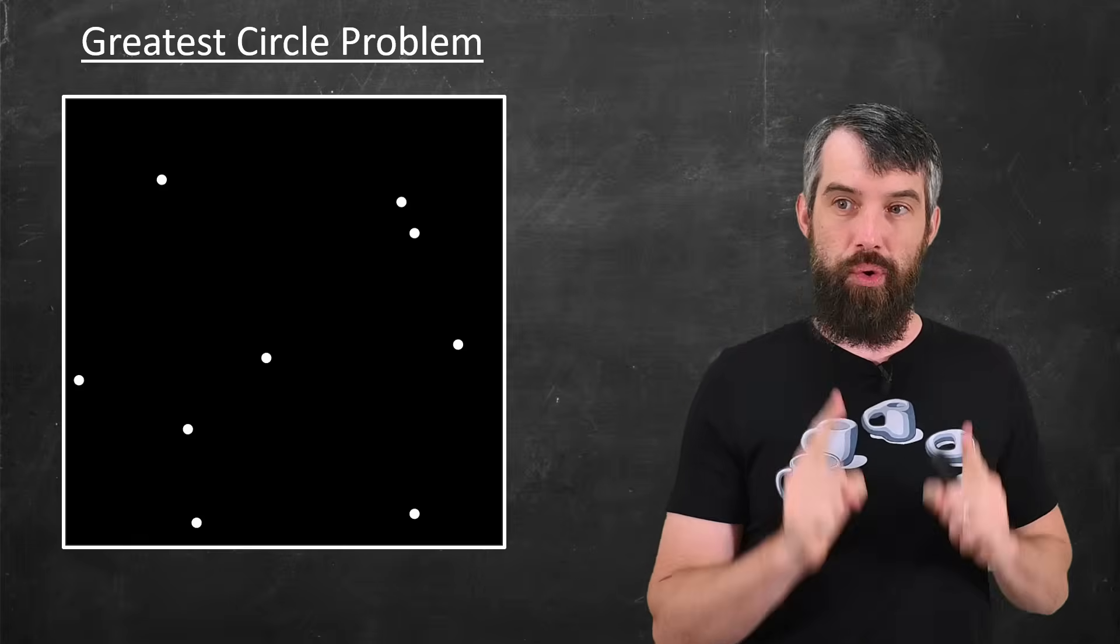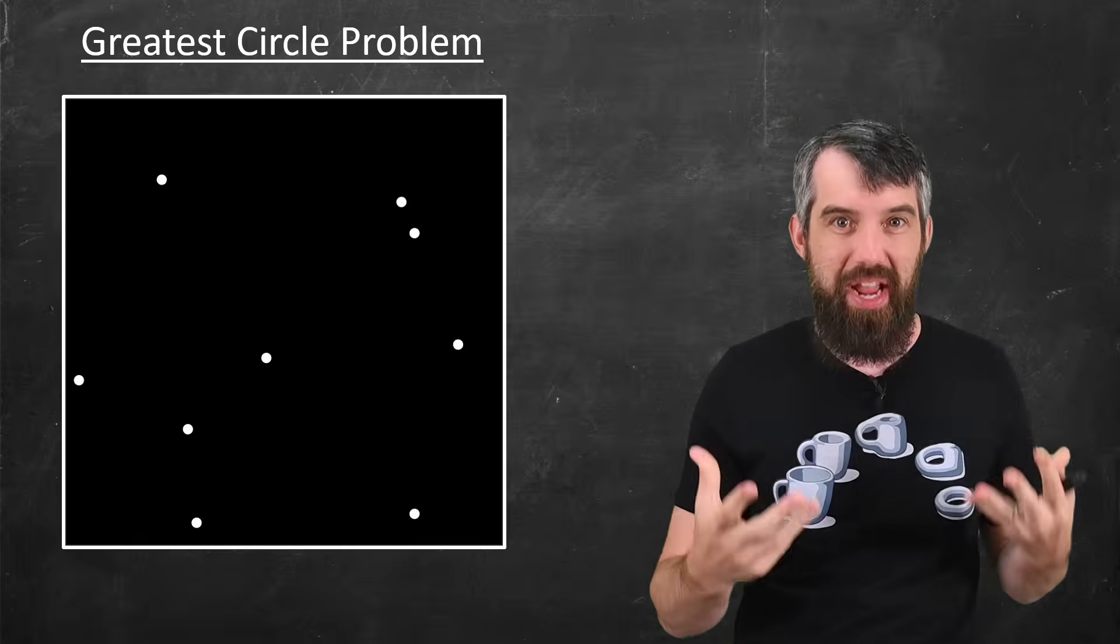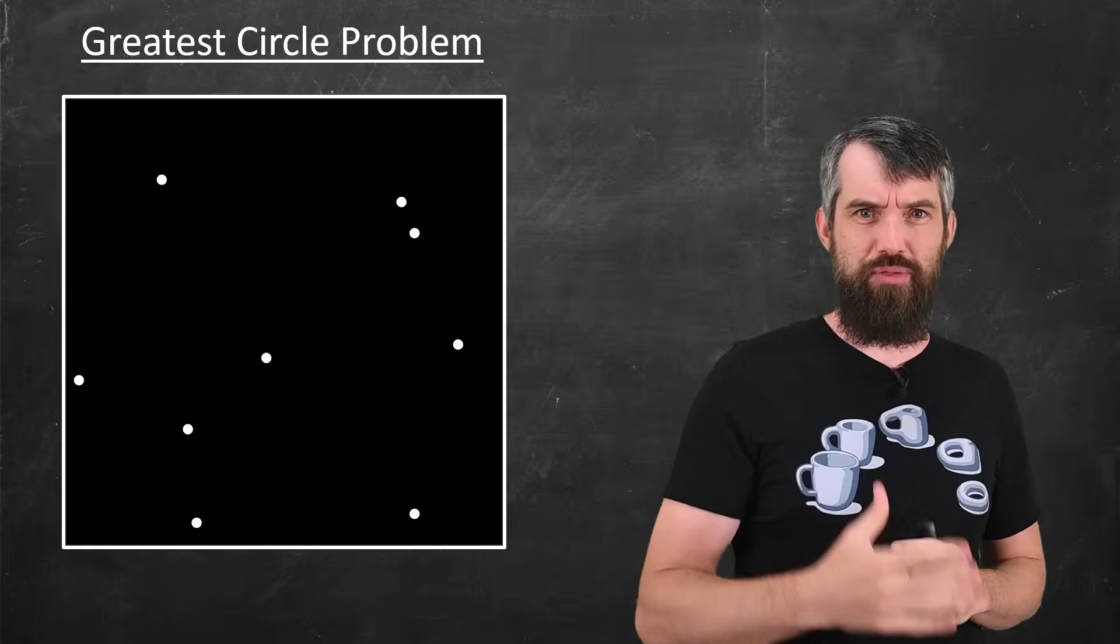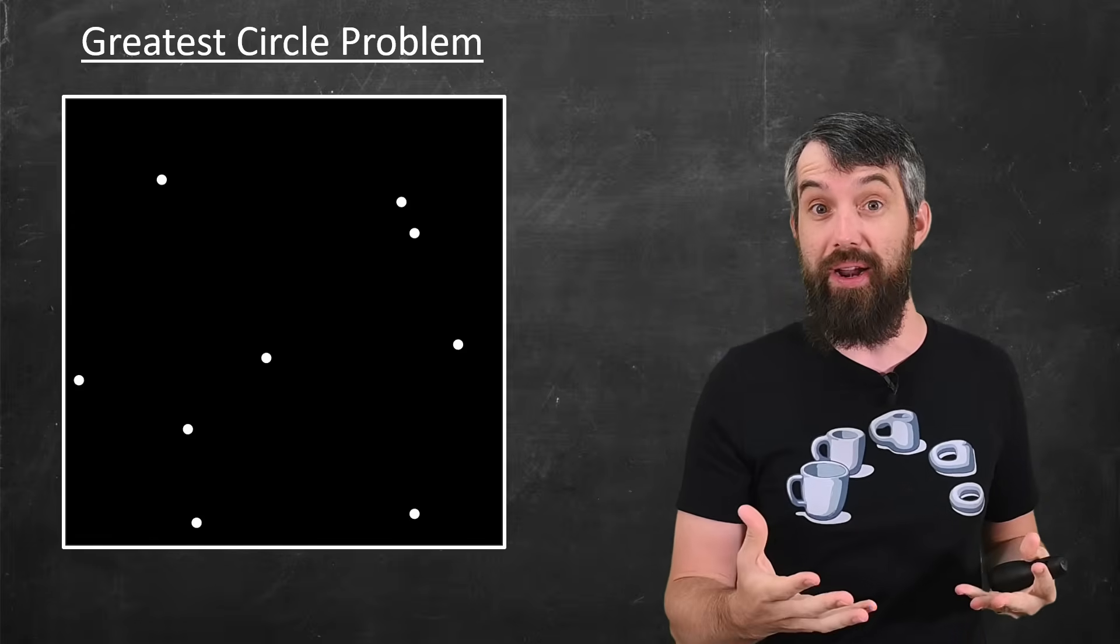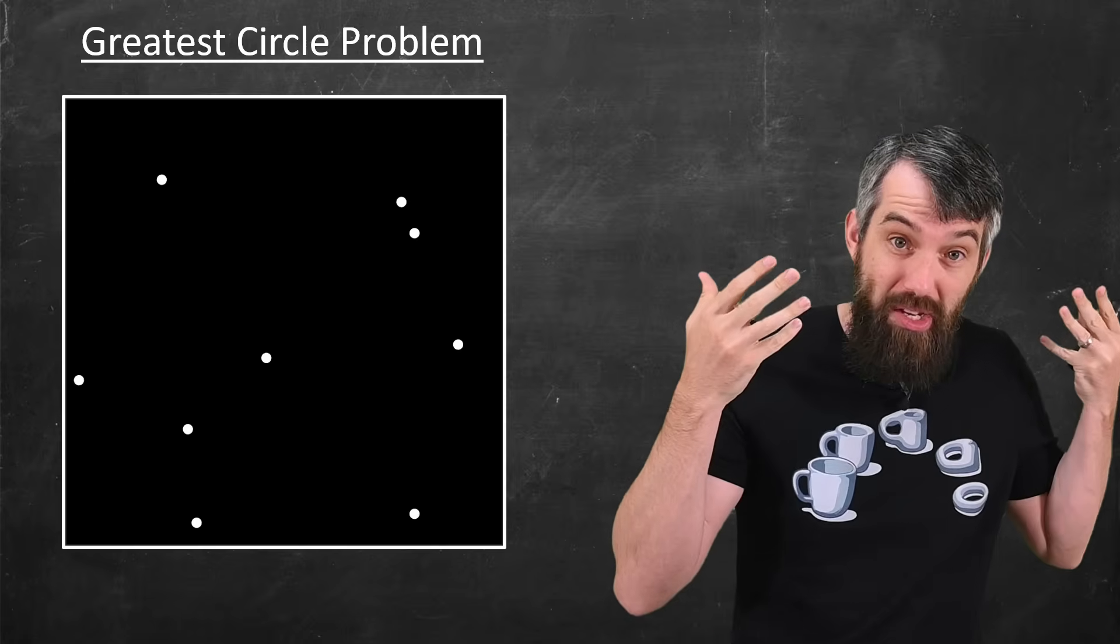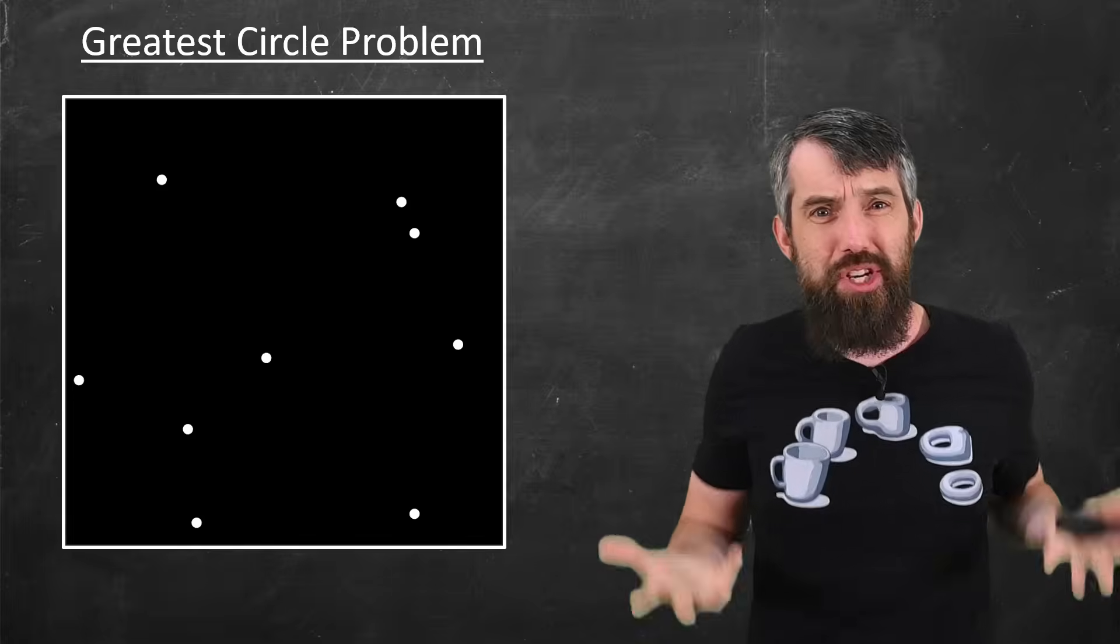Another great application of Voronoi cells is something called the greatest circle problem. Imagine you've got a city block and the points represent some established business like a supermarket. If you're a competitor, you want to come into this city, you want to build a new supermarket, where should you put it?